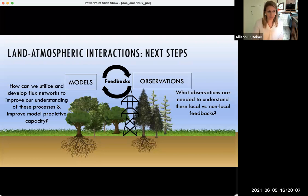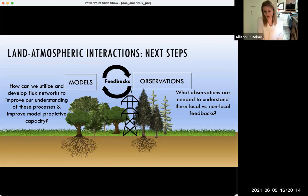In closing, I'd like to focus on how we think about these feedbacks. What observations are needed to understand local versus non-local? When do we have a perfectly locally forced event versus when we might have one that is more influenced by advective conditions? How can we use observations to understand that? And finally, with models, how can we utilize and develop the flux networks to improve our understanding of these processes as well as with this longer-term goal of improving our model predictive capacity? With that, I thank you for listening and I look forward to taking your questions in the discussion section. Thank you.